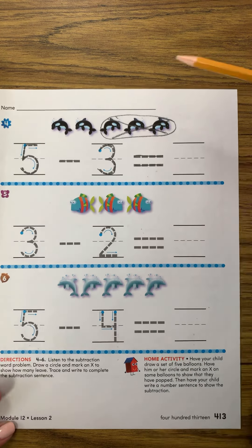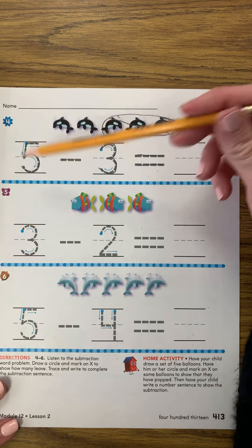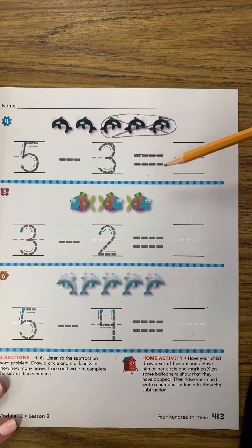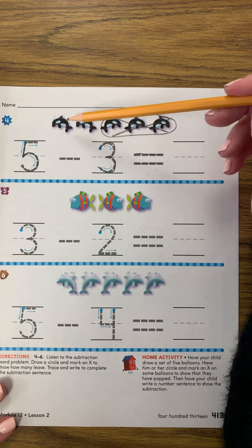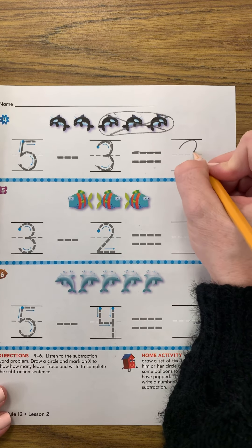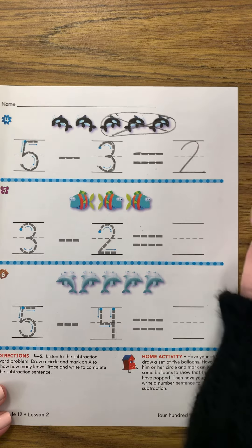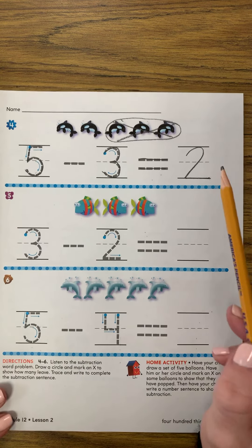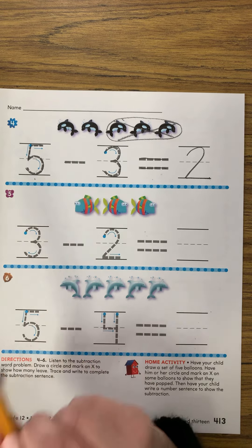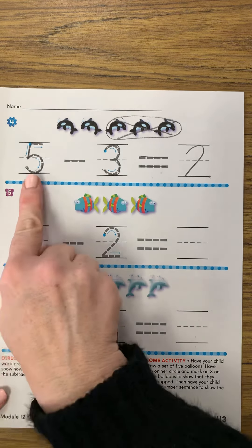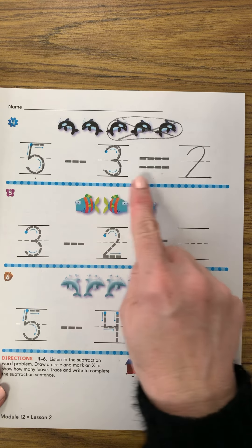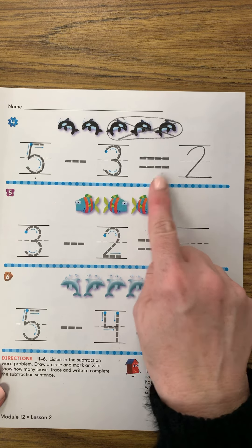And how many are left? We started with five. Three left. How many do we still have? One, two. Two. And let's read our math problem — it's just like when we're reading words, we'll put our fingers under it: five minus three equals two.